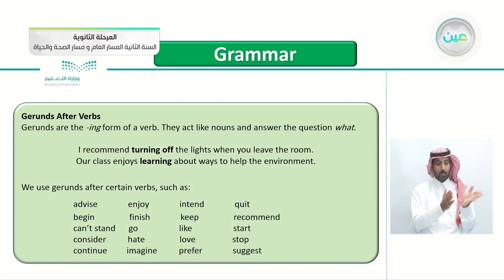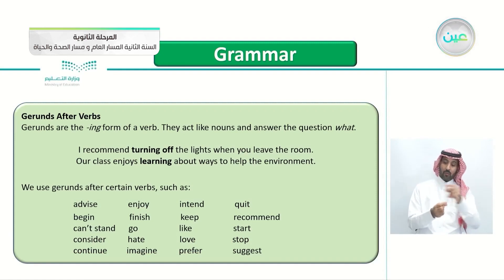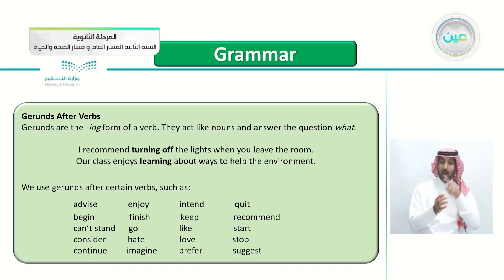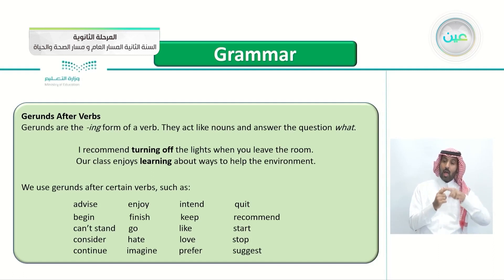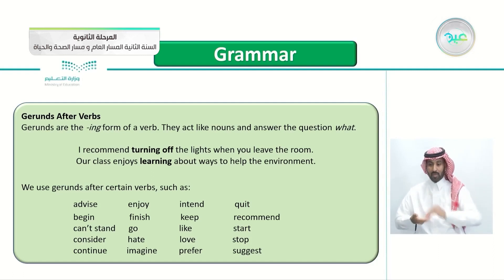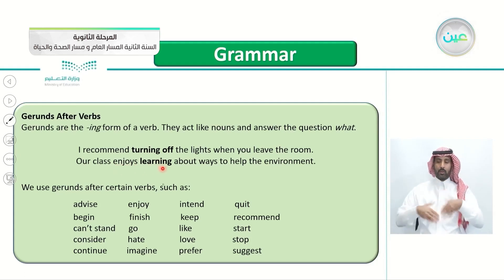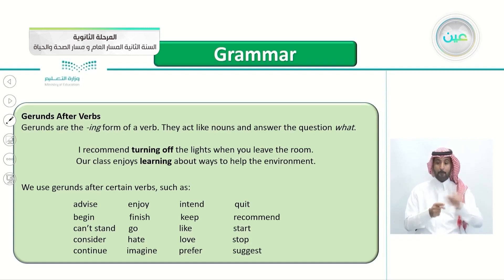Gerunds after verbs: gerunds are the ing form of a verb and they act like nouns, answering the question 'what?' For example: 'I recommend turning off the lights when you leave the room' — turning off is the gerund. 'Our class enjoys learning about ways to help the environment' — learning is the gerund after enjoys.